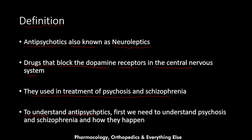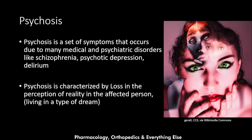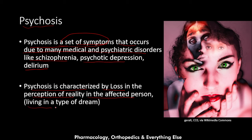To understand how antipsychotics work to treat schizophrenia and psychosis, we first need to understand how psychosis and schizophrenia occur. Psychosis is a set of symptoms that occur due to many medical and psychiatric disorders like schizophrenia, psychotic depression, and delirium. Psychosis is characterized by loss in the perception of reality — the person with psychosis is living in a type of dream.